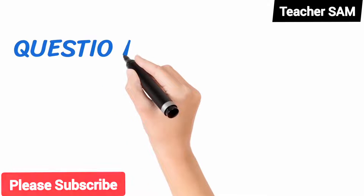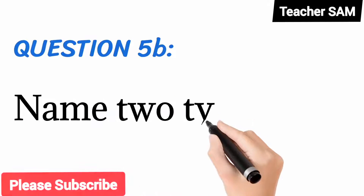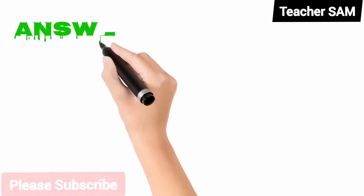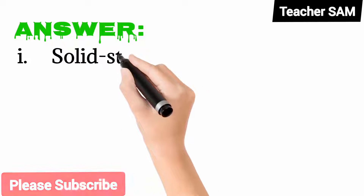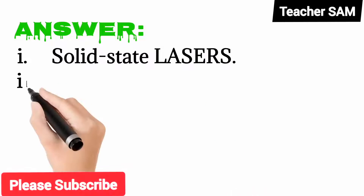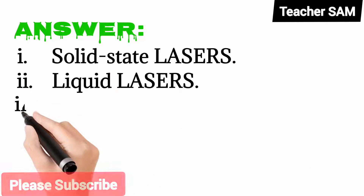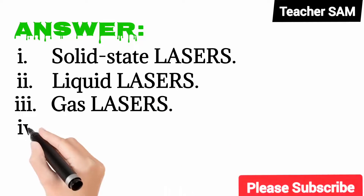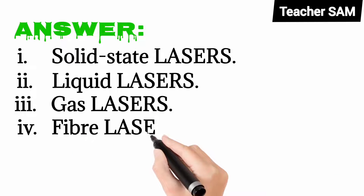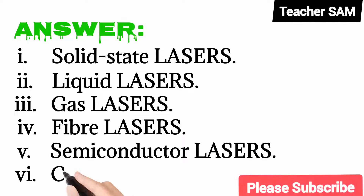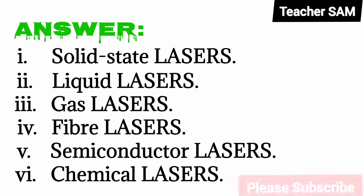Question 5b: Name two types of lasers. Answer: 1. Solid state lasers, 2. Liquid state lasers, 3. Gas lasers, 4. Fiber lasers, 5. Semiconductor lasers, 6. Chemical lasers. Use any two as the answer.